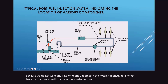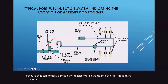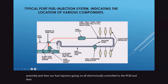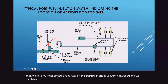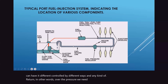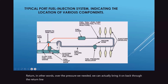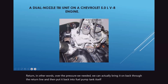We go into the fuel injection rail assembly, and then the fuel injector is electronically controlled by the PCM. We have a fuel pressure regulator on this one — it's vacuum controlled and can be controlled different ways. Any excess pressure is returned via the return line back into the fuel tank itself.